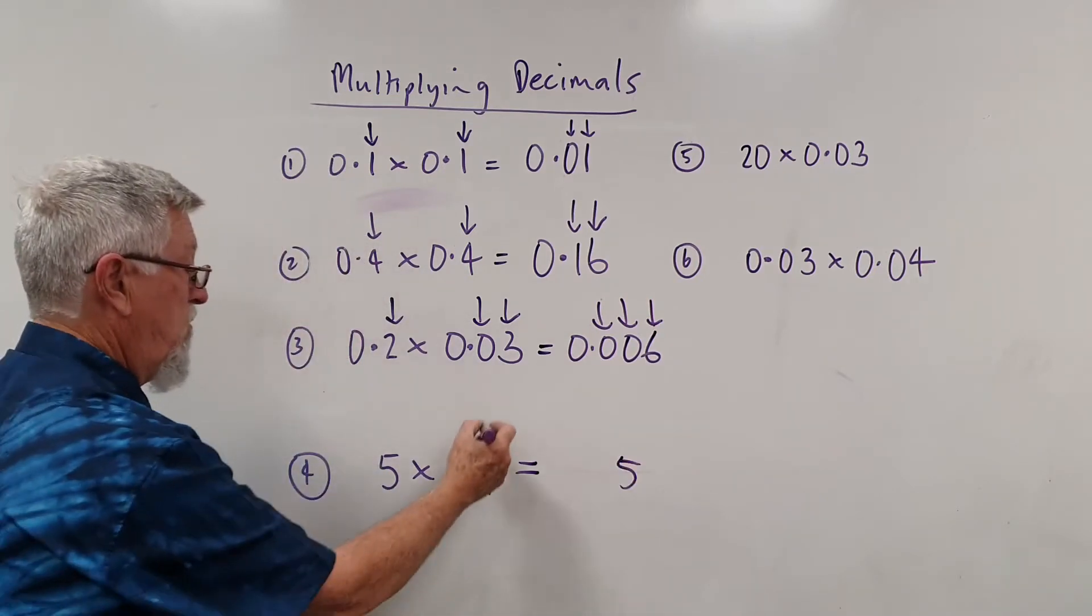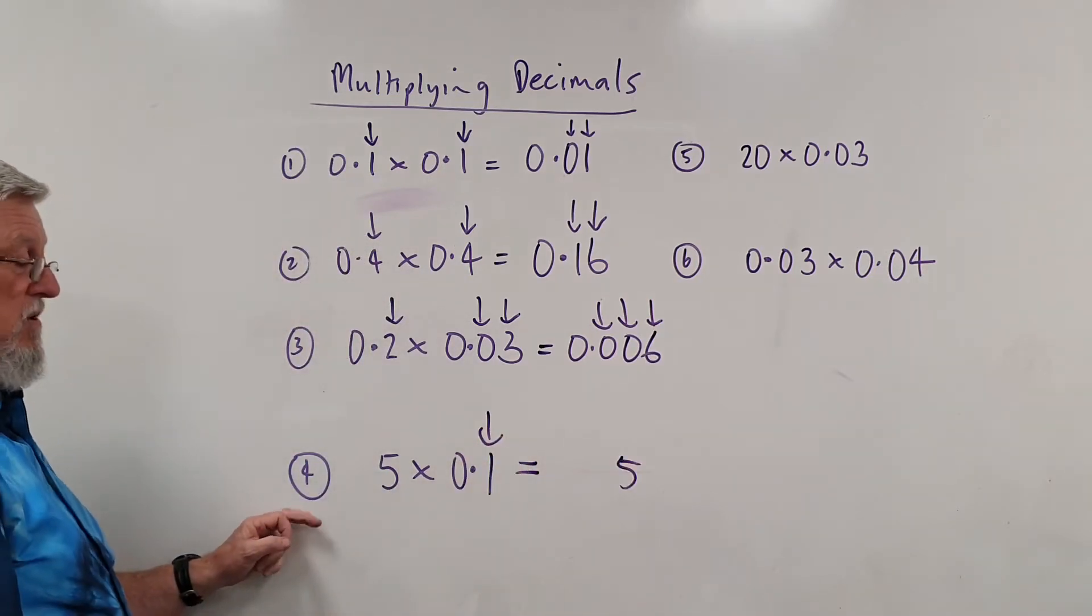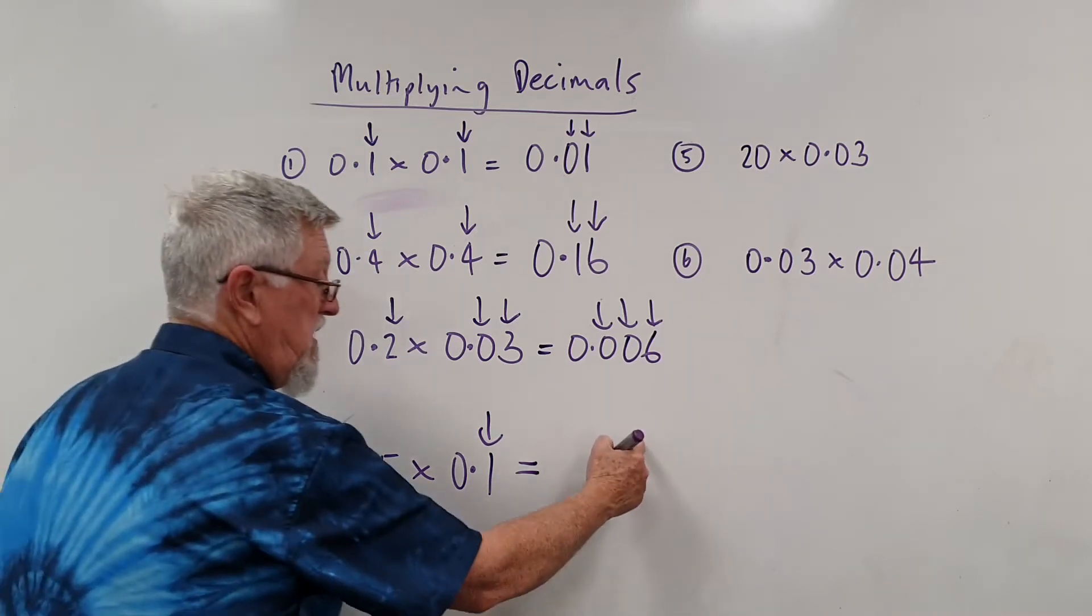Five times one is five. Now one decimal there, so I need one decimal place. There it is.